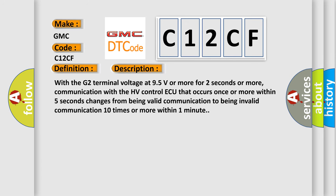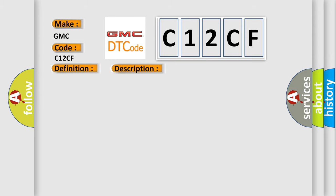With the G2 terminal voltage at 95 volts or more for two seconds or more, communication with the HV control AQ that occurs once or more within five seconds changes from being valid communication to being invalid communication ten times or more within one minute.